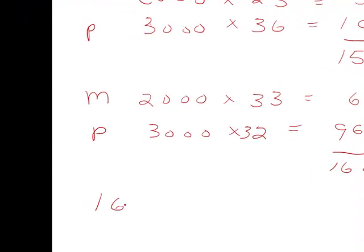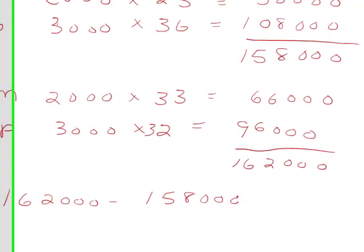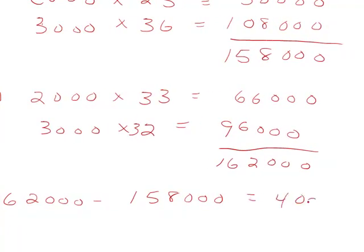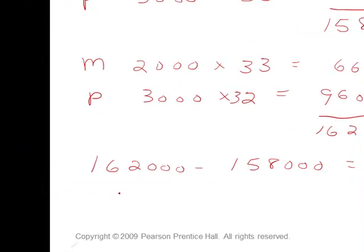What's our return? We have $162,000 minus what we paid, $158,000. We have a $4,000 return. Let's turn that dollar return into a percent. We have a $4,000 gain. We paid $158,000. We have a little over 2.5% return from our investment in Microsoft and Pepsi.